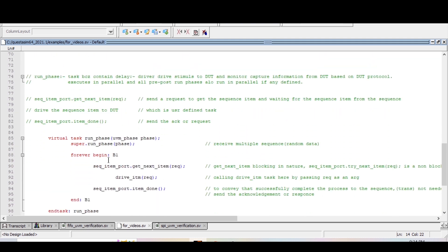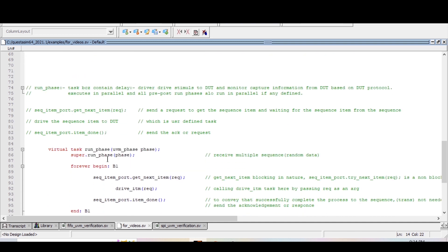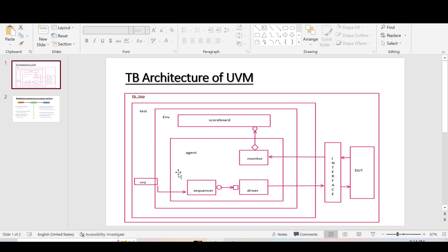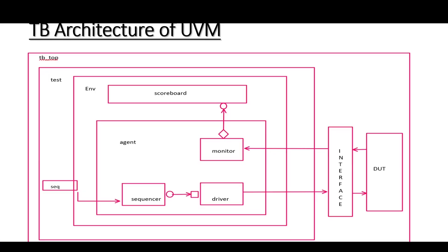Here we will try to understand how this handshaking mechanism happens between the body method of the sequence and the driver run phase. So let me explain with this testbench architecture. As you can see, the environment has an agent component, and this agent has three essential components: monitor, sequencer, and driver. The sequencer and driver are connected with the help of a TLM port-export. We are starting this sequence onto this sequencer which is in the agent of this environment.